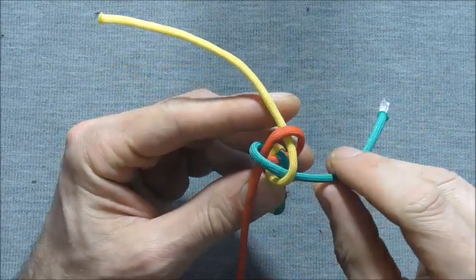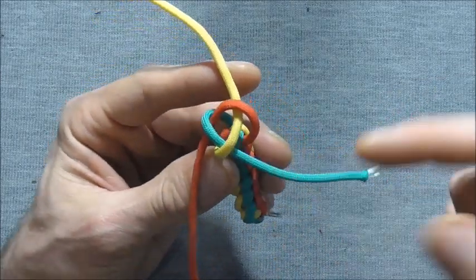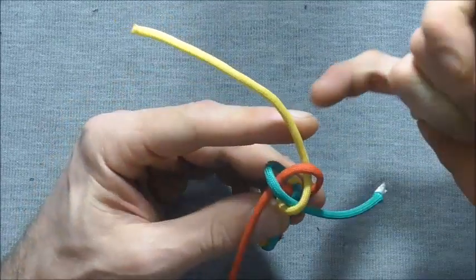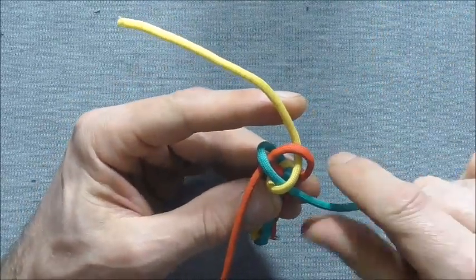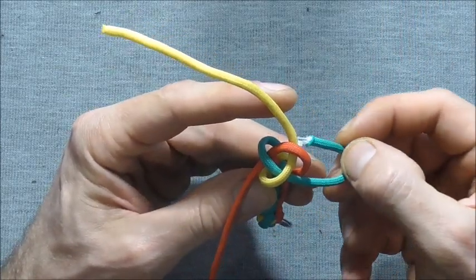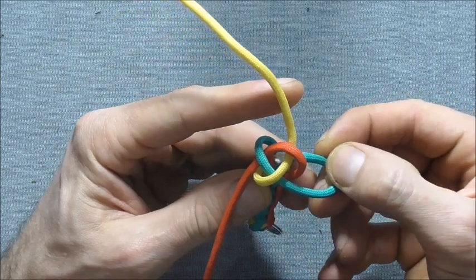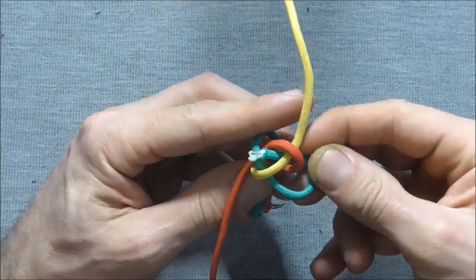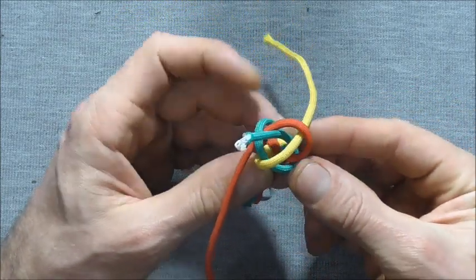And then to finish it off we just want to take each of these strands around the adjacent strand and then up through the center of the knot. So this blue piece will go around the red, underneath the yellow, and up through the center.